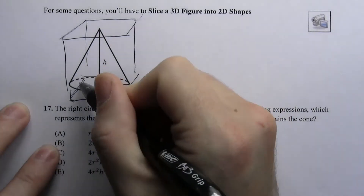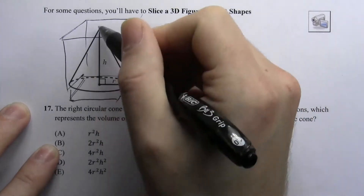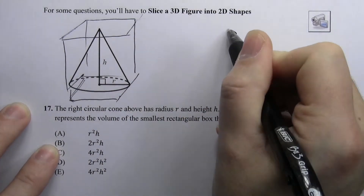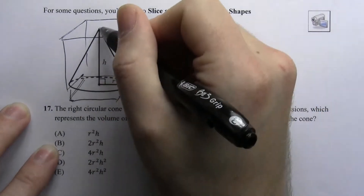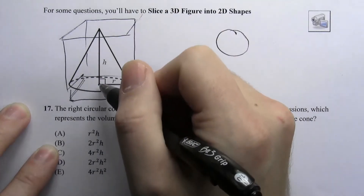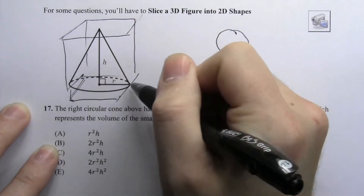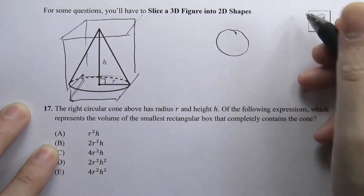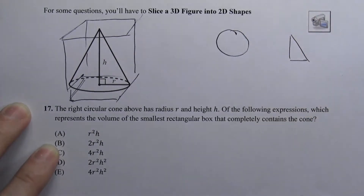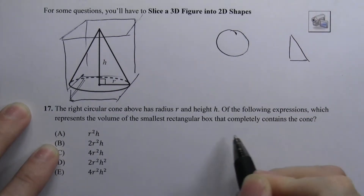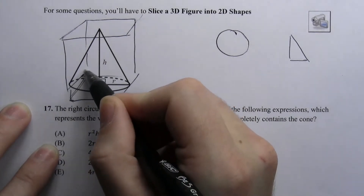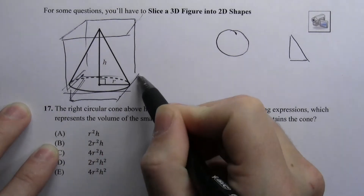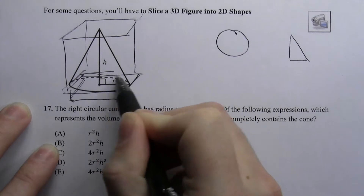When we start to do this, we can recognize that a cone is really just a circular base. You could think of the top of the cone as extensions of a right triangle that goes in all different directions. So we also have a right triangle here. The box has to be big enough to accommodate this circle that makes up the base of the cone.